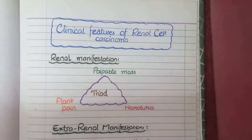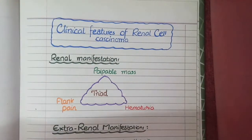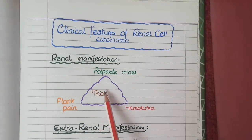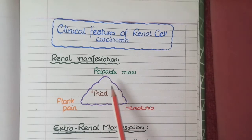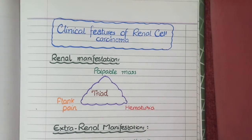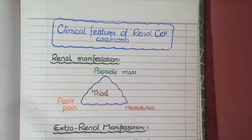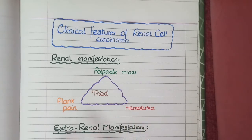The clinical features of renal cell carcinomas are divided into renal and extra-renal manifestations. The classical renal triad consists of palpable mass, flank pain, and hematuria. A growing tumor appears as a palpable abdominal mass; it stretches the renal capsule causing localized flank pain; and tumor cell invasion of surrounding vasculature causes leakage of blood into the urinary system, known as hematuria.